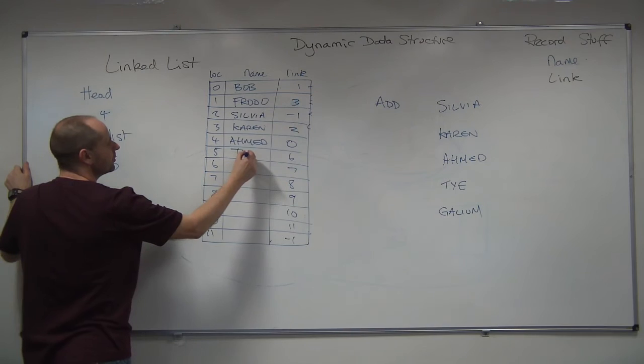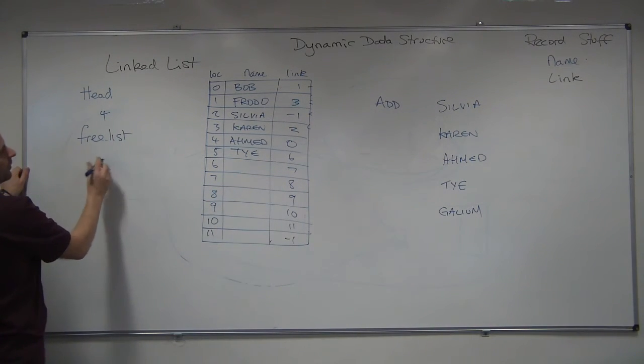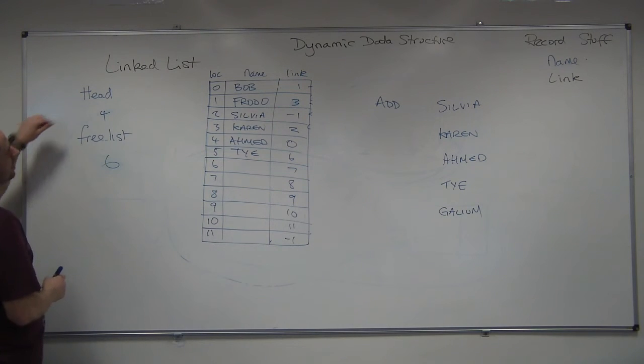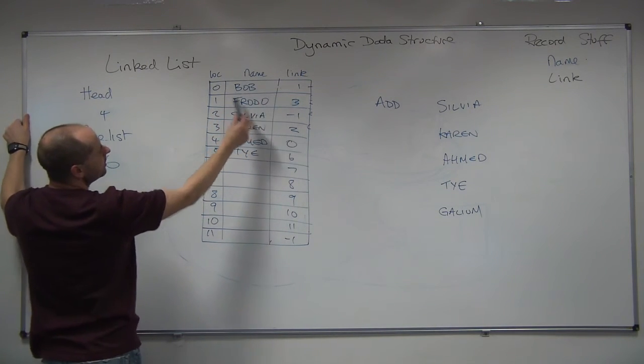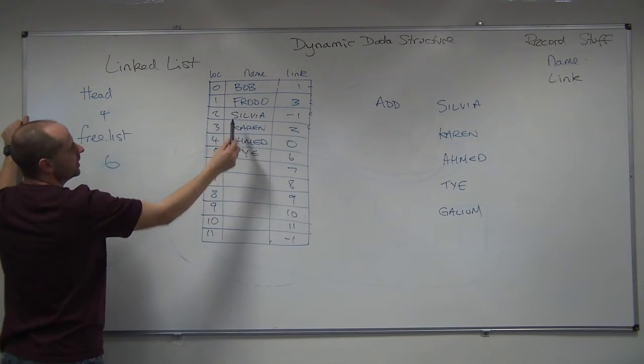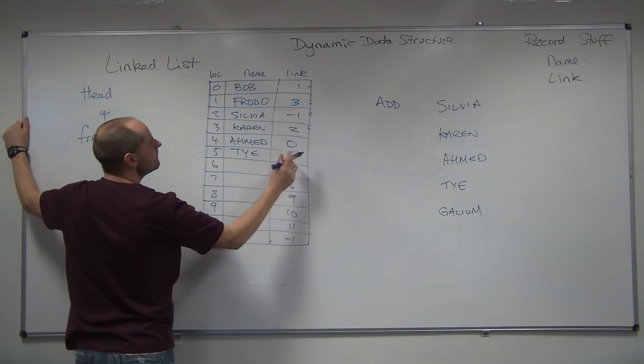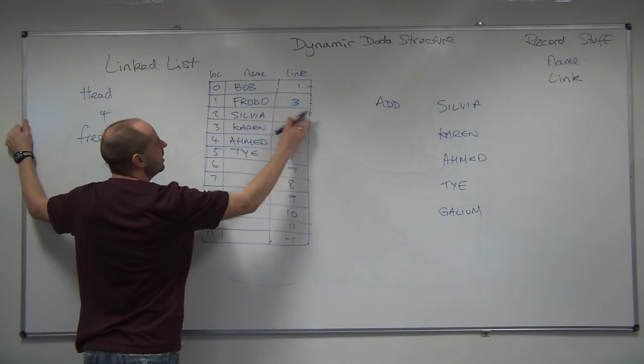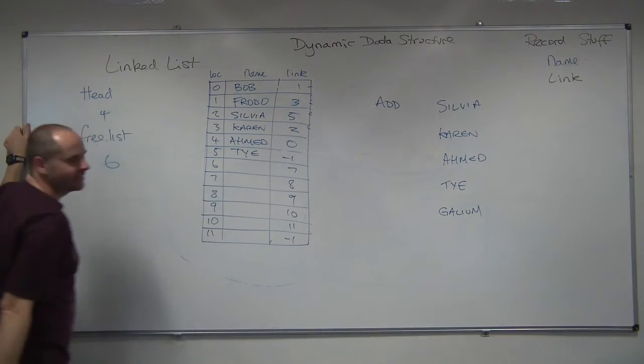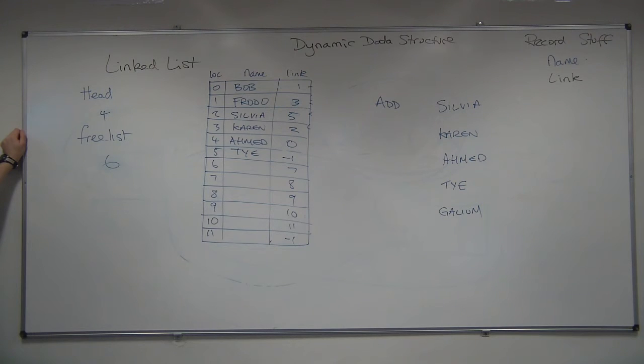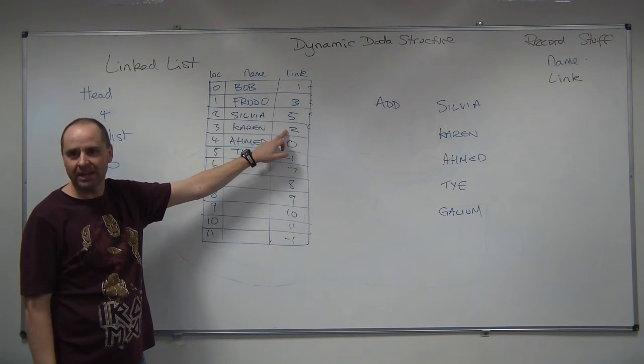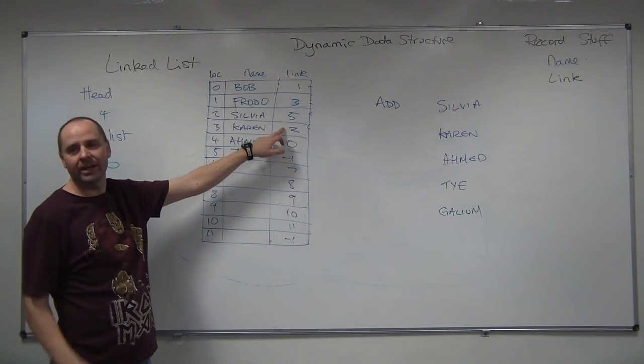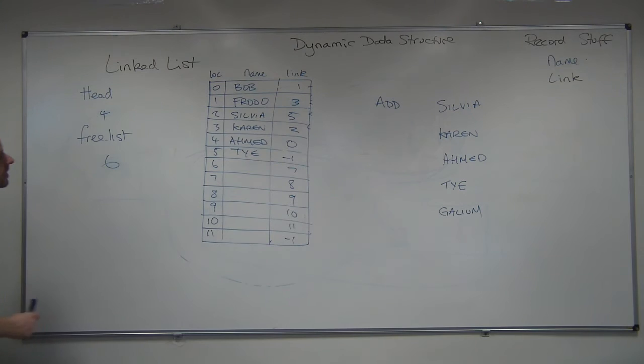Carrying on. Ty goes into free space. Alter the free space pointer. So it's pointing to the next free one. Search for Ty. So we start at the head. Ahmed. Bob. After that. Then we go to Frodo. Then we go to Karen. Then we go to Sylvia. Oh, Ty's going to come after that. So put down minus one. Copy that from Sylvia. And make Sylvia point to Ty. Why is Karen two? It comes after Frodo. Two is pointing to what follows. Sylvia followed Karen. Two is the location that comes next.